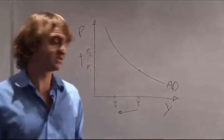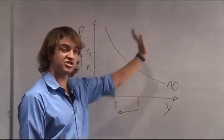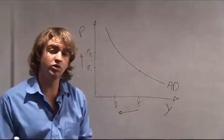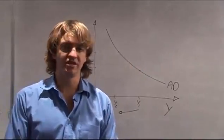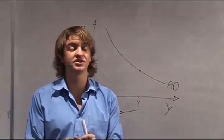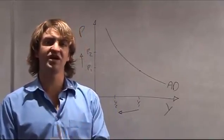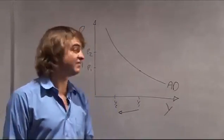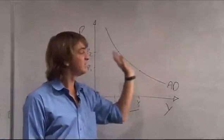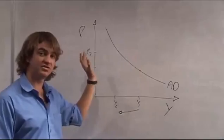Finally, the determinants of the aggregate demand curve that shift it up and down are all your aggregate expenditure variables: consumption, investment, government expenditure, and net exports. If any of those factors increase, it will shift your aggregate demand curve to the right. If any of them decrease, it will shift it to the left.